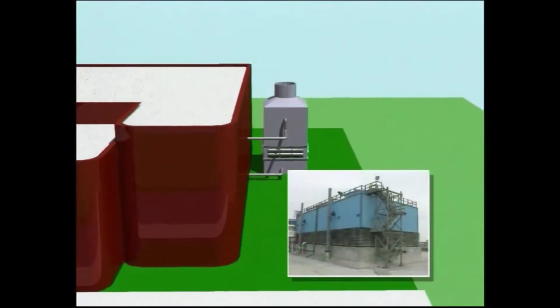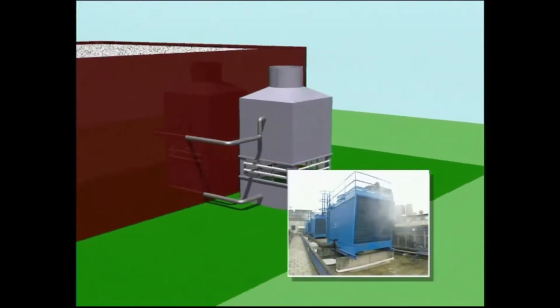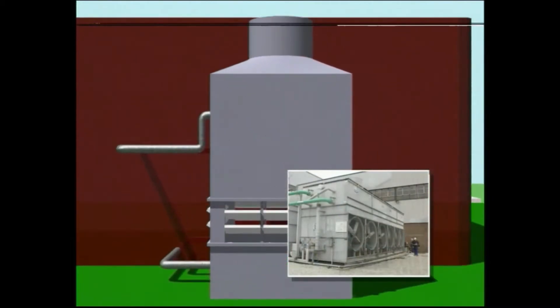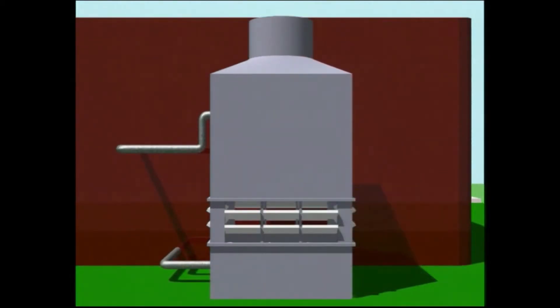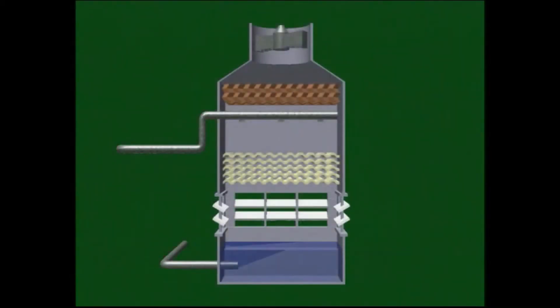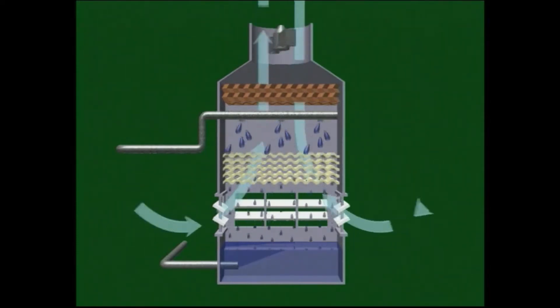Cooling towers are widely used in industrial applications. They work by transferring heat from circulating water to a flowing air current. This is generally achieved by distributing the water against a counter-current airflow.